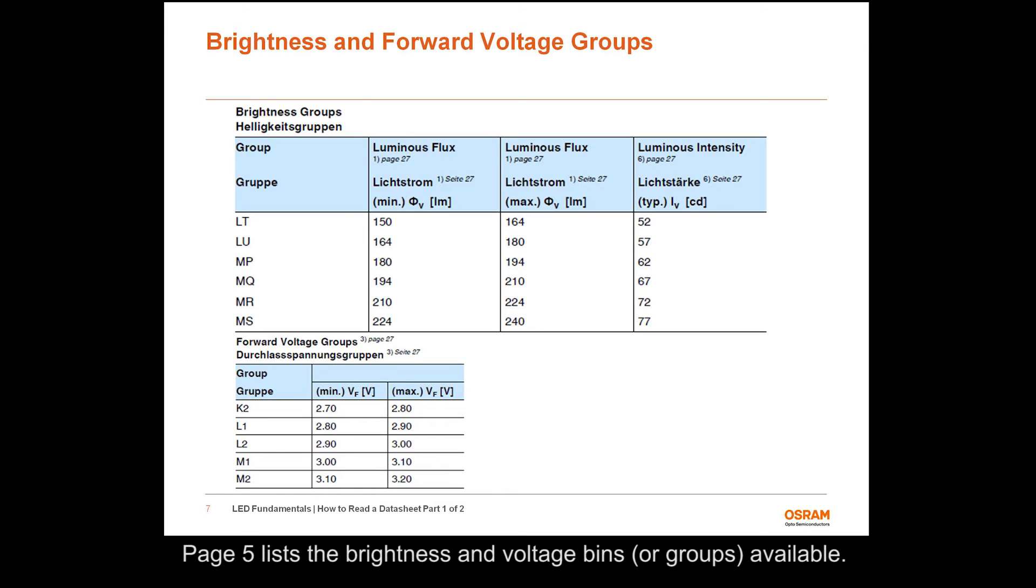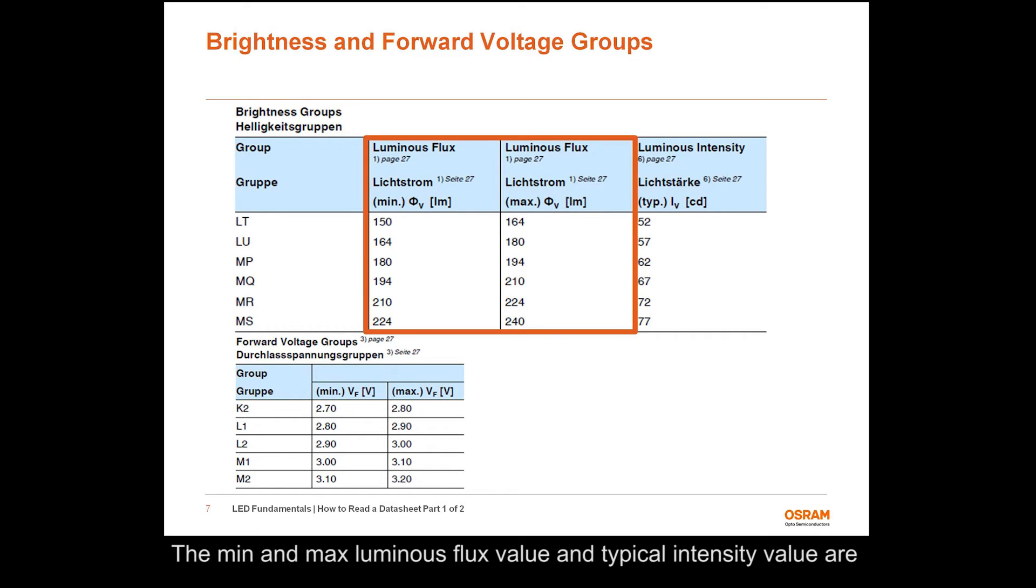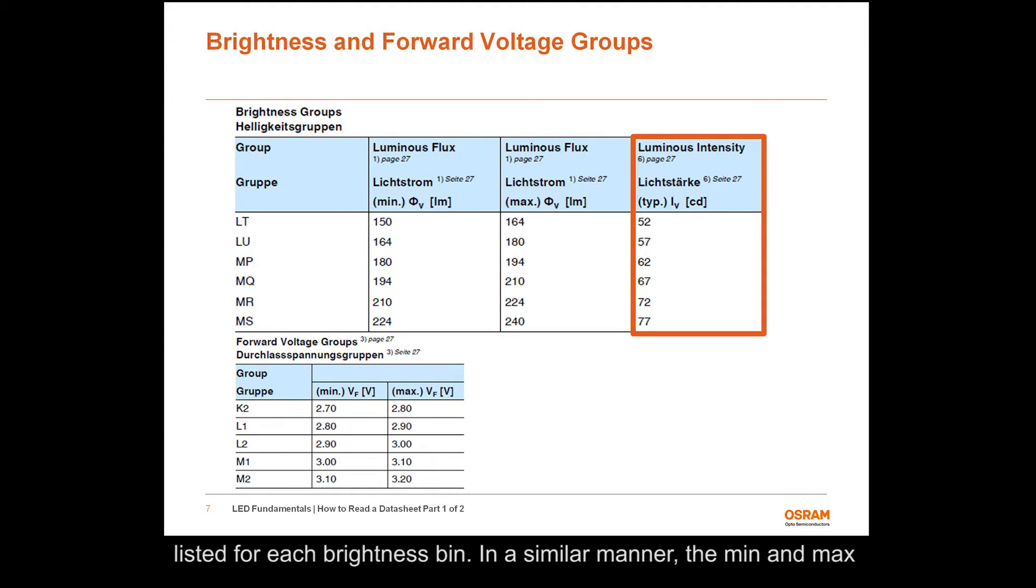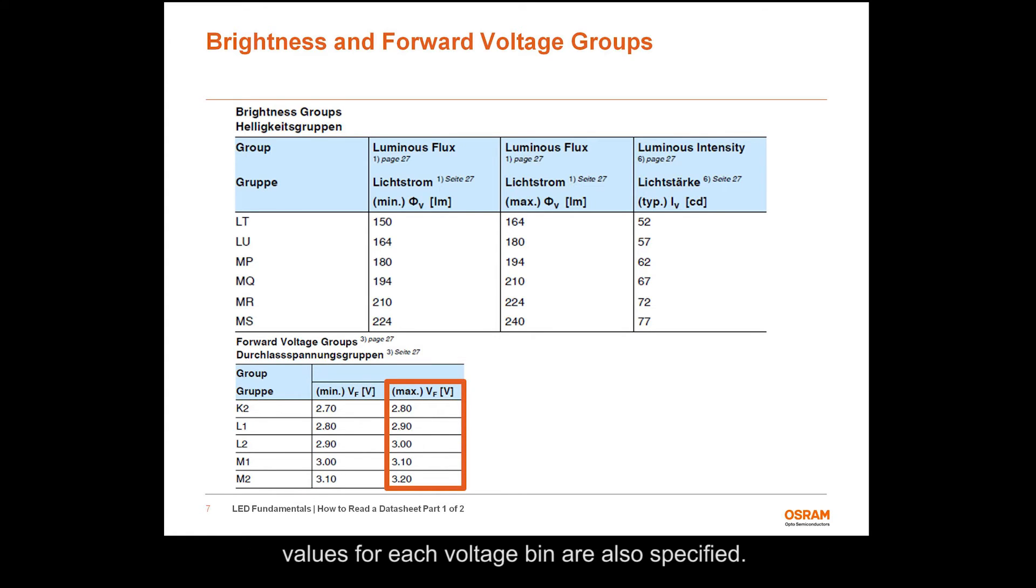Page 5 lists the brightness and voltage bins, or groups, available. The min and max luminous flux value and typical intensity value are listed for each brightness bin. In a similar manner, the min and max values for each voltage bin are also specified. Individual brightness or voltage bins cannot be ordered. On the other hand, no reel of parts ever contains more than one brightness bin or forward voltage bin.